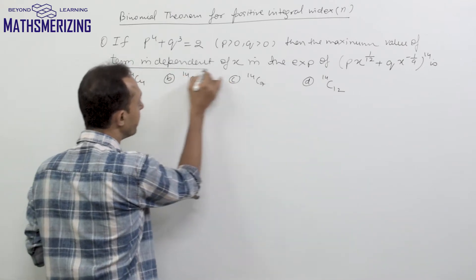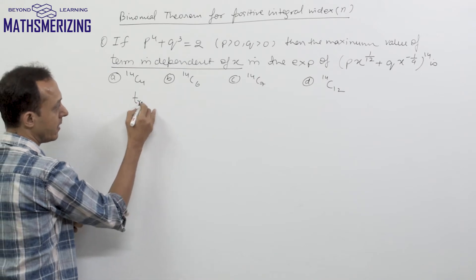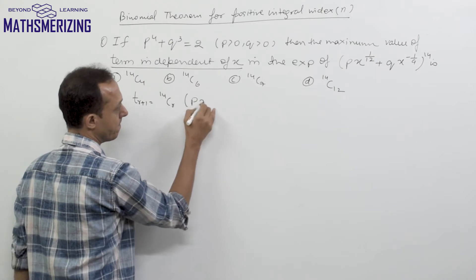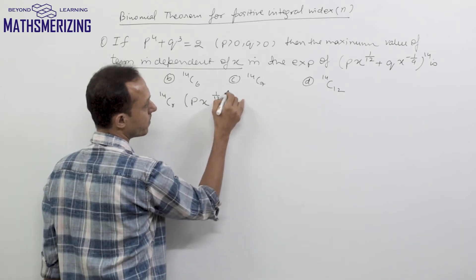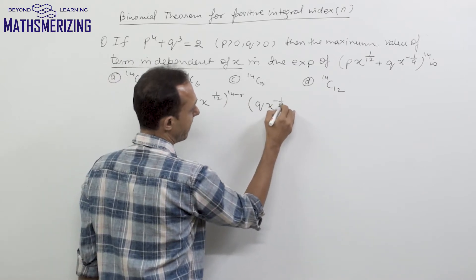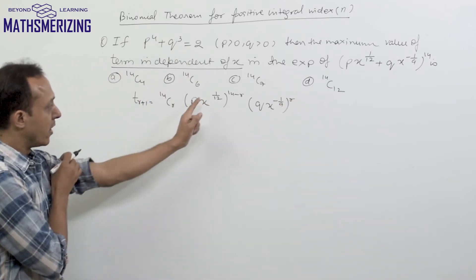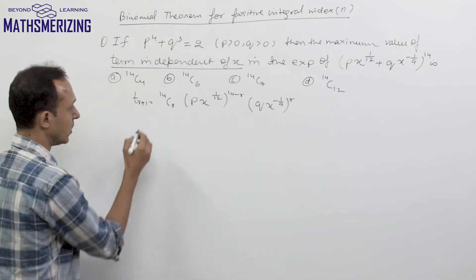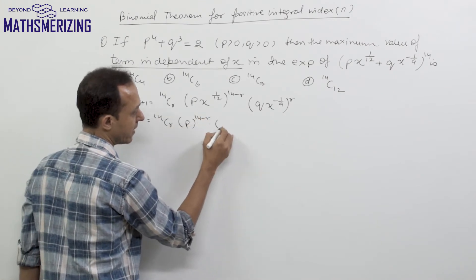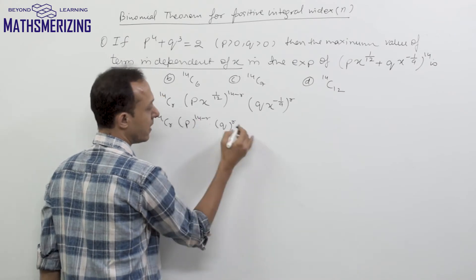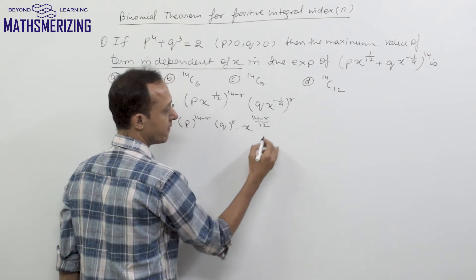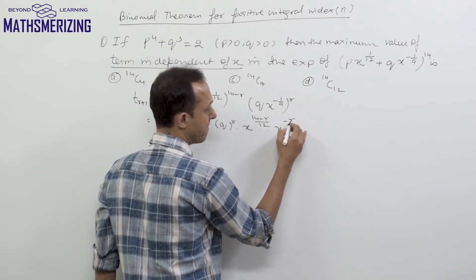The first thing is to find the term independent of x, so I write its general term. The general term will be 14Cr · (p·x^(1/12))^(14-r) · (q·x^(-1/9))^r. Separating p and q, this becomes 14Cr · p^(14-r) · q^r · x^((14-r)/12) · x^(-r/9).